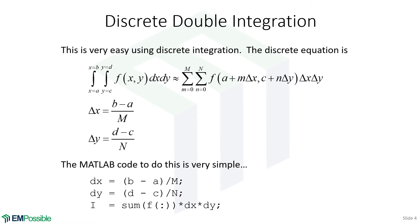And the MATLAB code is incredibly simple. We'll calculate our dx and dy. We'll take f, which is a two-dimensional array, reshape it to a column vector, then sum it, so it's adding up all of the numbers, and then multiplying by dx and dy. And that gives us our double integration. So literally, in one line of code, we're performing a double integration.